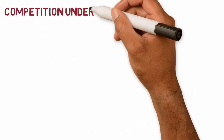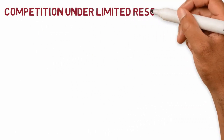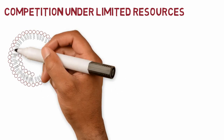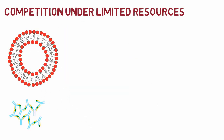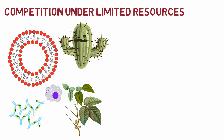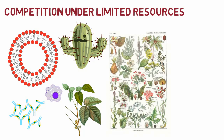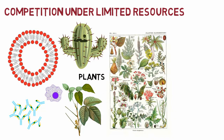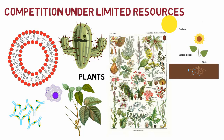Under limited resources, survival machines compete for survival by finding novel ways to protect themselves, destabilize their rivals, and obtain food. With the depletion of the food source in the primeval soup, a branch of survival machines, now called plants, started to utilize sunlight to build complex molecules from simple ones.